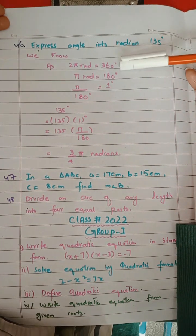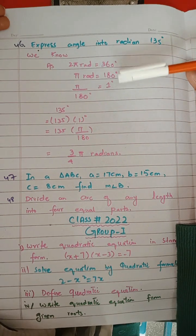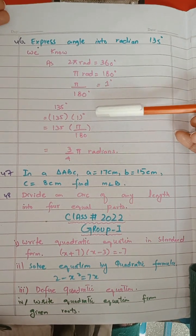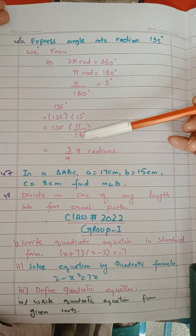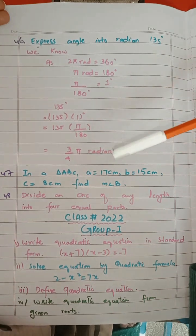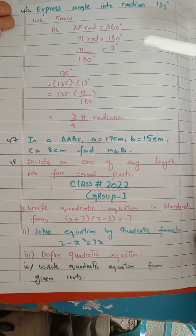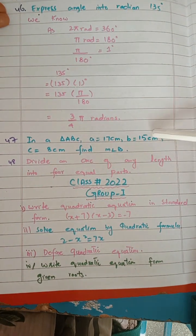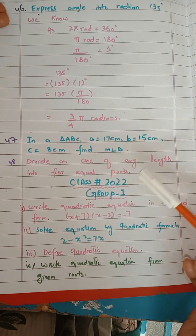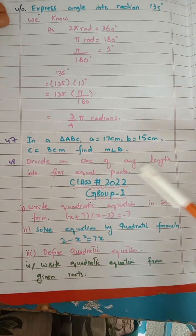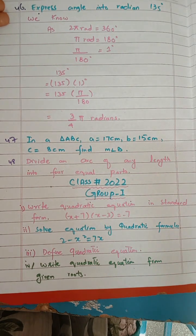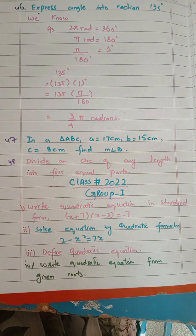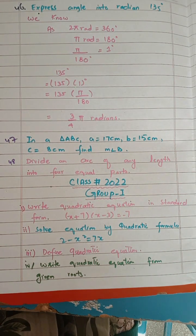When theta equals 135 degrees, find theta in radians. Multiply by pi over 180 degrees — we need the 1 degree value. Break 135 as 3 by 4, giving 3 by 4 pi radians as the answer. The next question about dividing an arc into 4 equal parts is a repeated question — we have done it in group 1, so I haven't solved it again. We have completed paper 2021.